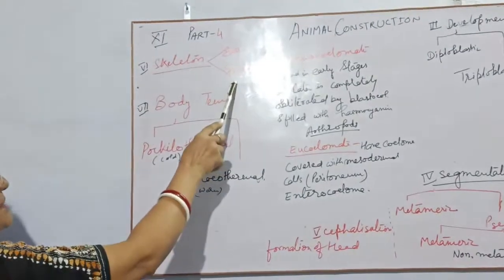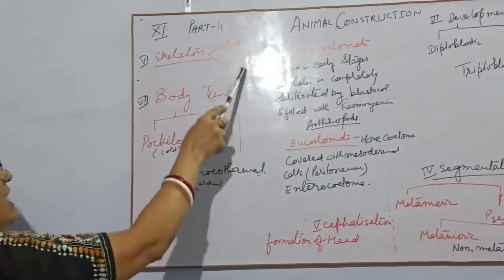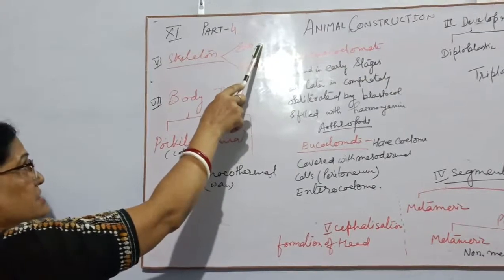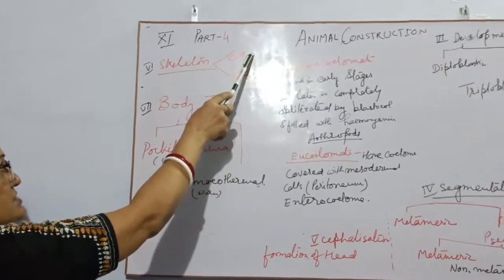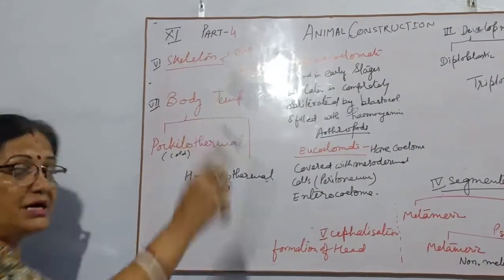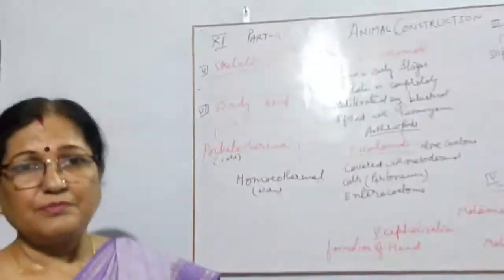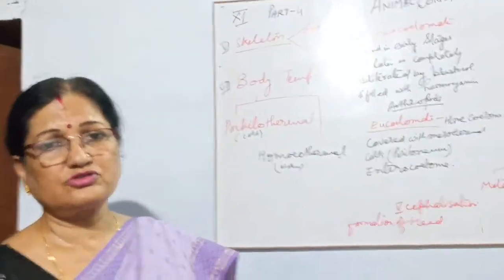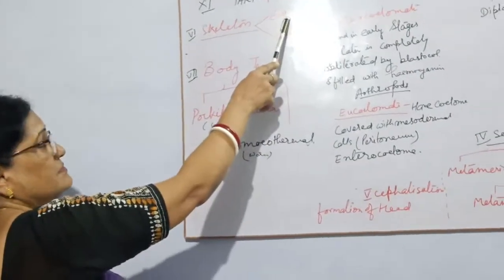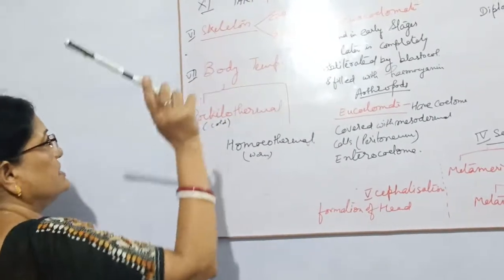Human beings have endoskeleton, frogs have endoskeleton, fishes have exoskeleton in the form of scales, and birds have exoskeleton in the form of wings but also have bones. So this is the example of exo and endoskeleton.